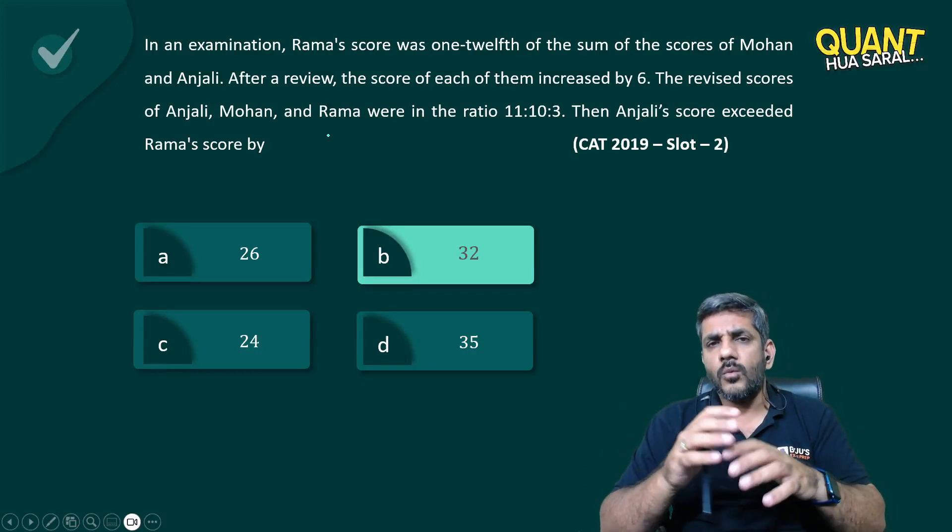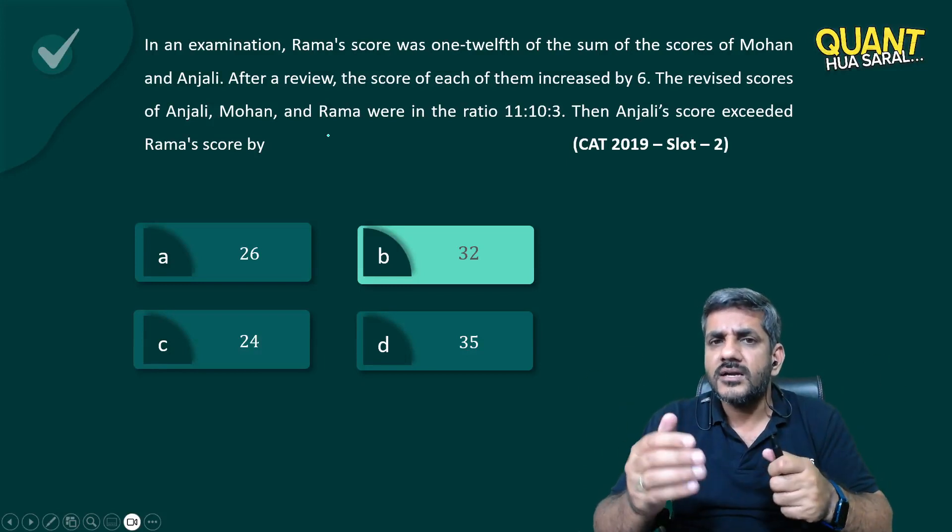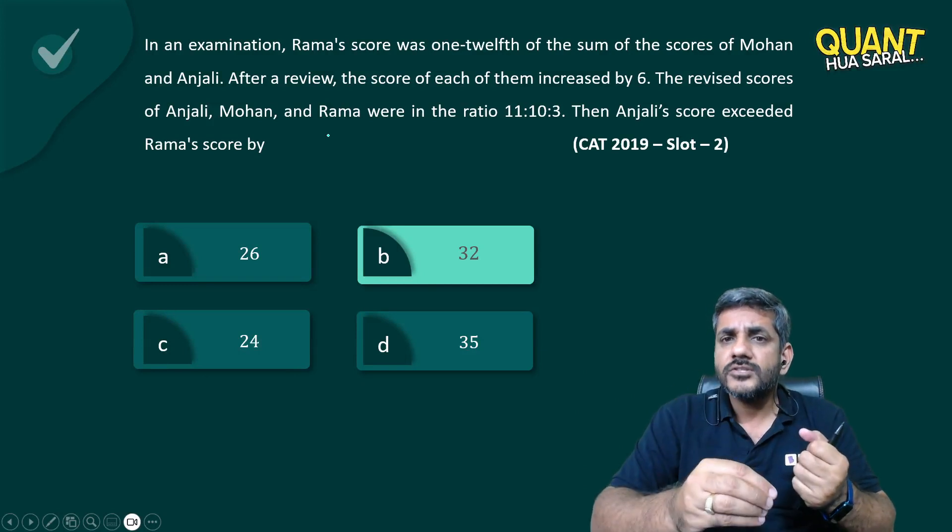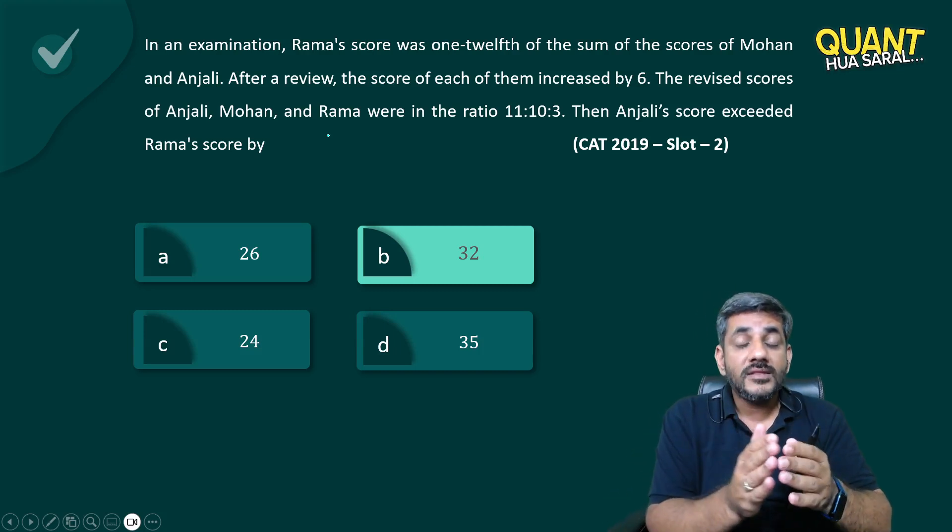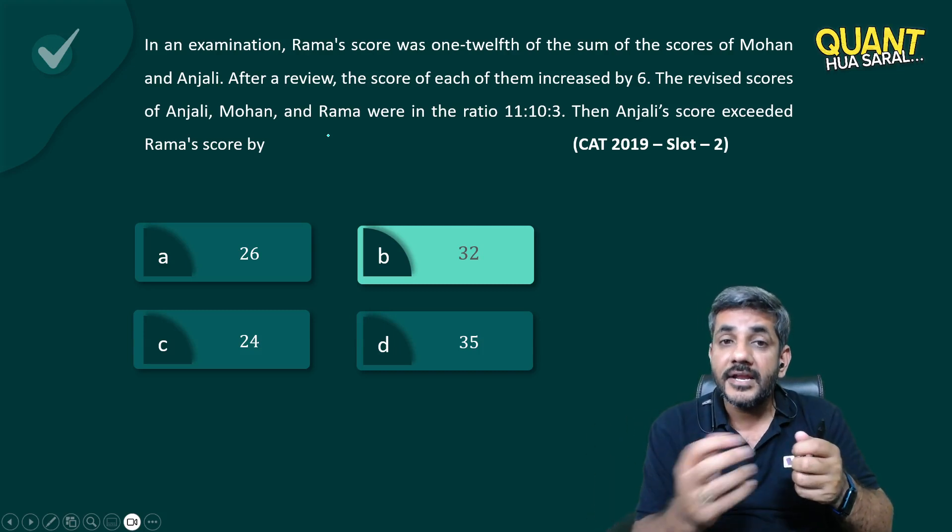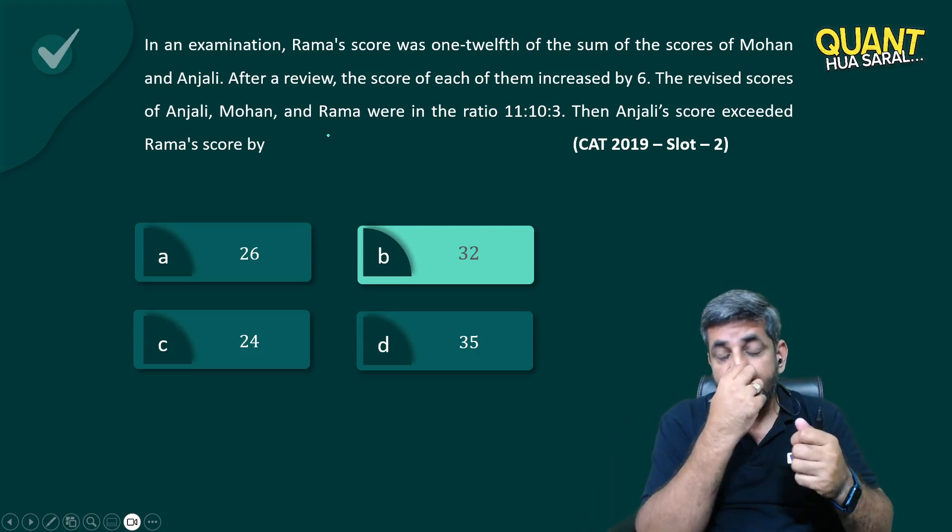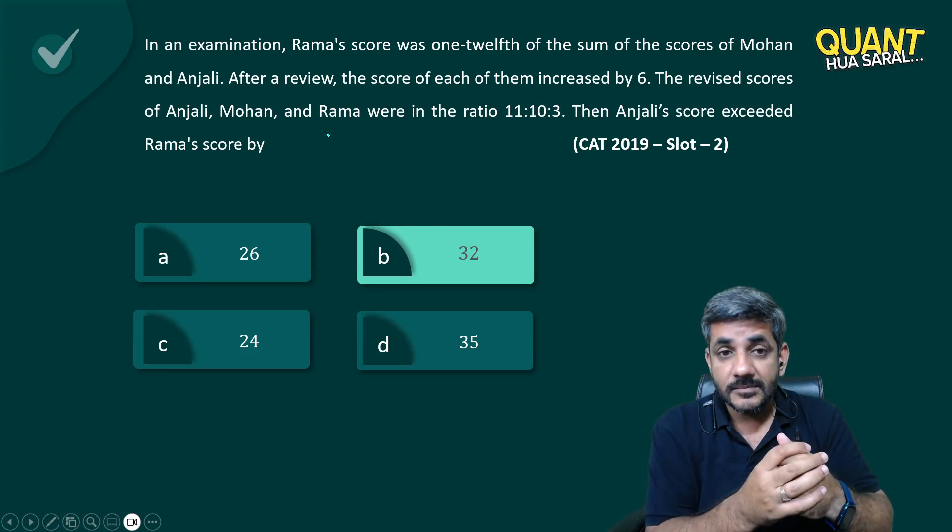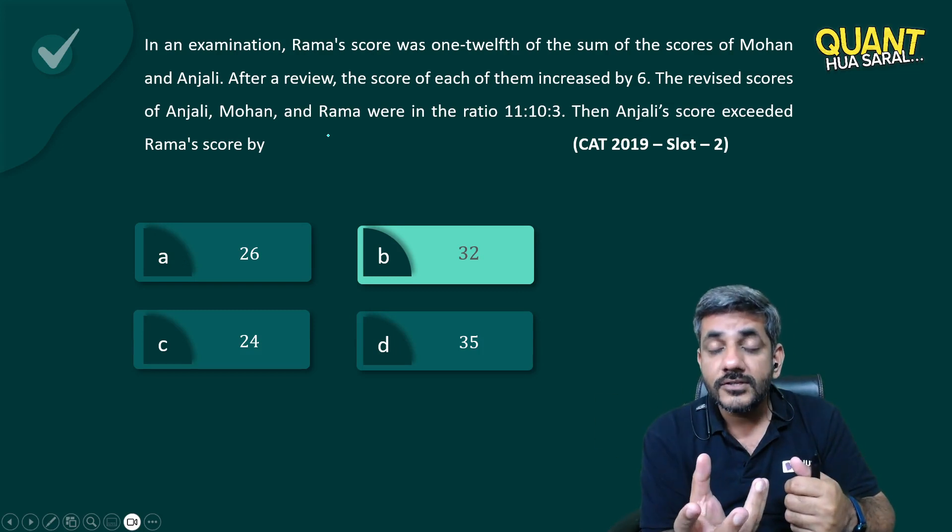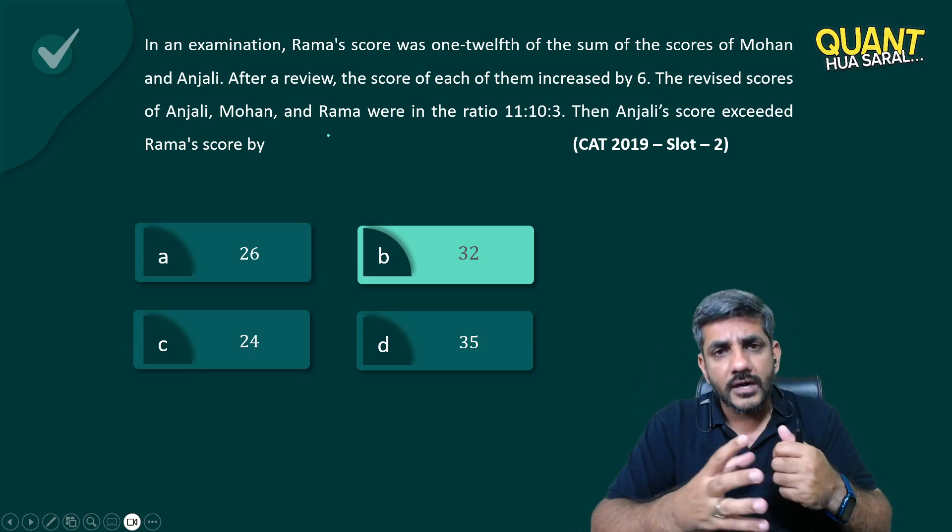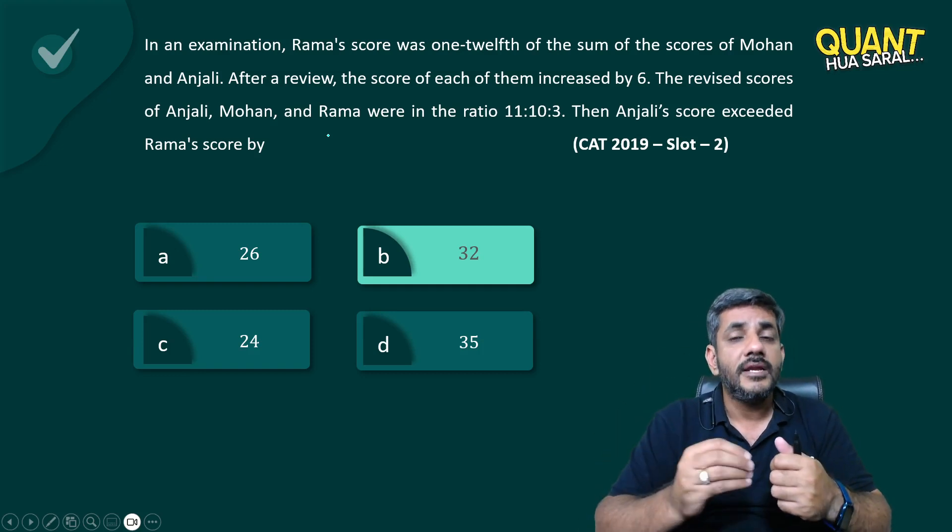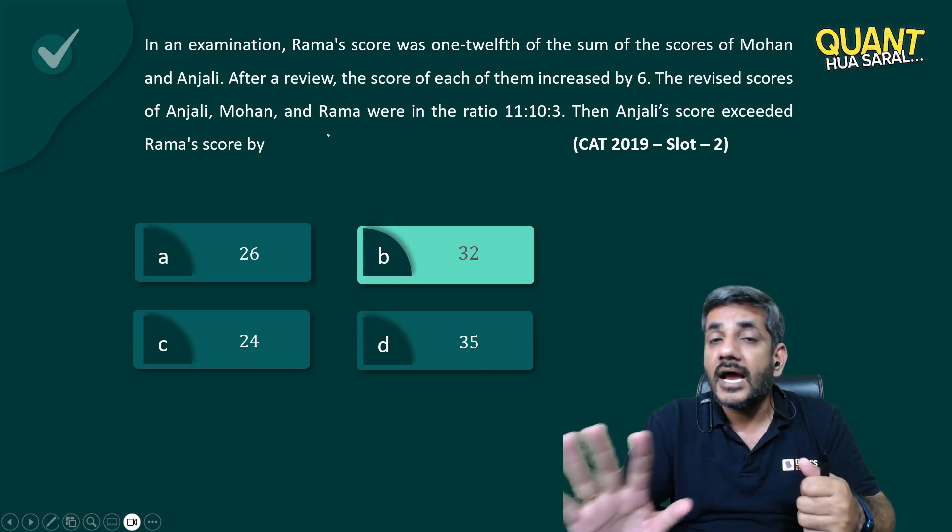But once you practice these things, you will understand one thing. Rama's score is 1/12 the sum of their scores. Their scores are increased by 6. So when the scores are increased by an integer, score of one guy is 1/12 of the sum of the other, and ratio is also given to us. In those cases, it becomes almost a surety that all numbers would be in integers.